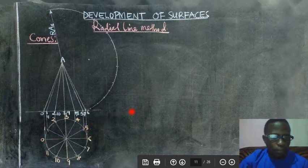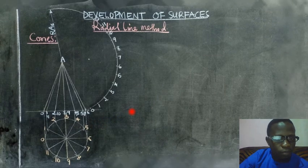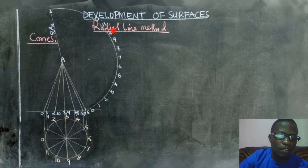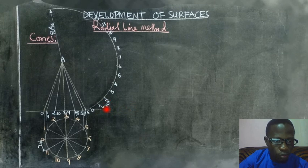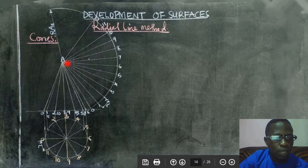After putting those divisions we can number them for easy plotting and we have 1, 2, 3, 4, 5, 6, 7, 8, 9, 10, 11 back to 0. Now I'm trying to put the demonstration here that the distance between 1 and 2 is equivalent to the small arc radius on the circle. So what we do we now join those lines from the apex to those points.